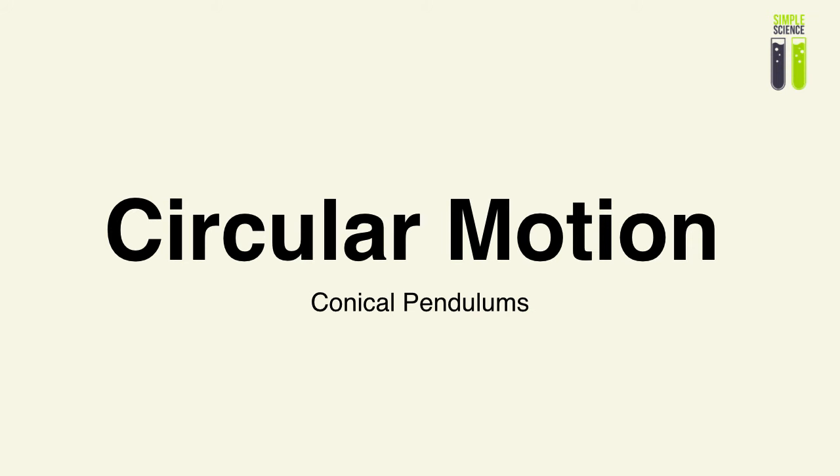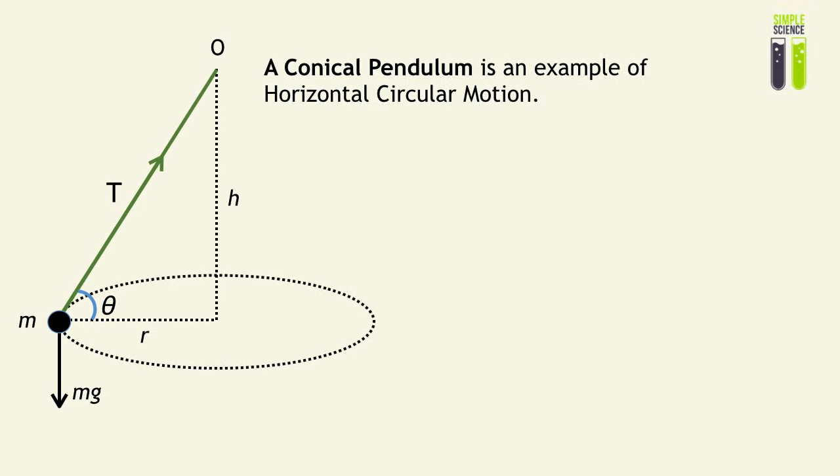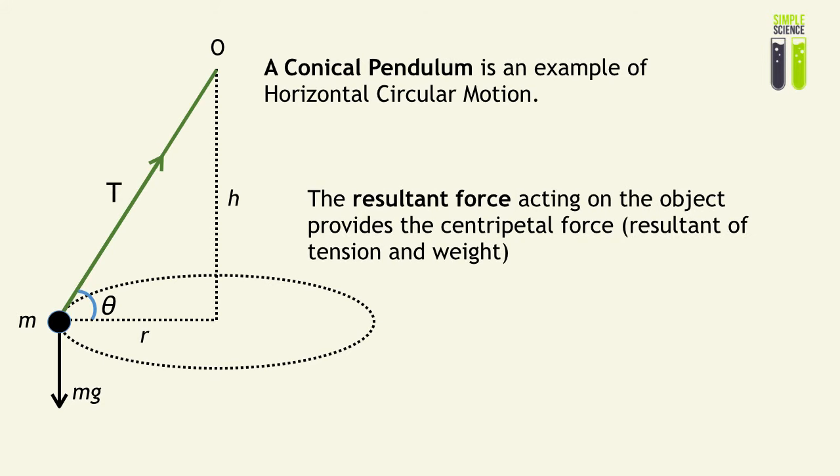There are many examples of horizontal circular motion, and a prominent example is the conical pendulum. A conical pendulum is an example of horizontal circular motion, and a conical pendulum acts on the same principle as any other horizontally circular motion situation, where the resultant force acting on the object will provide the centripetal force.